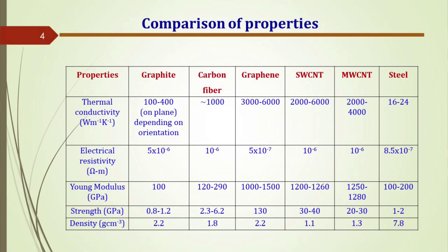All these materials — graphite, carbon nanotube, graphene oxide, and fullerene — have excellent properties. Let me compare them with a common material, steel. Steel has a strength of 1 to 2 gigapascals. Carbon nanotubes and graphene have almost 1 to 2 orders higher strength. But the density is almost one-sixth that of steel. So the specific strength — strength per unit weight or per unit density — is huge for these carbon-based nanomaterials.